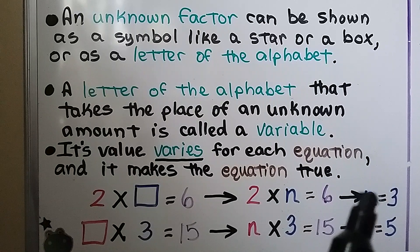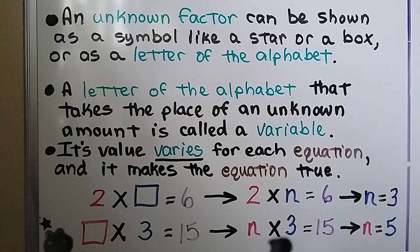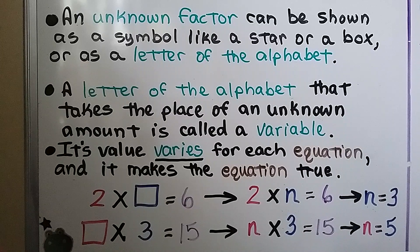In the first equation, n was equal to 3, and in the second equation, n was equal to 5. Its value varies for each equation, and it's important that it makes the equation true.